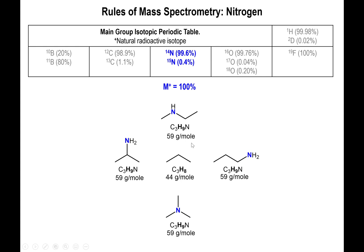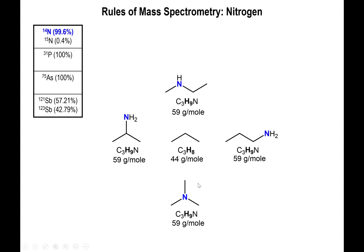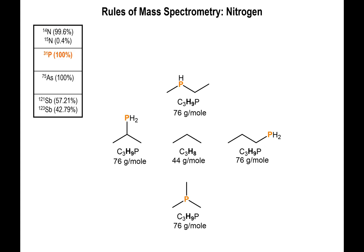When you have one nitrogen present — regardless of whether you have two hydrogens bound to nitrogen, one, or none — no matter what, the molecular mass is an odd number: 59 g/mol in all cases shown here. Whereas the regular alkane from which we derive the various amines has an even mass.